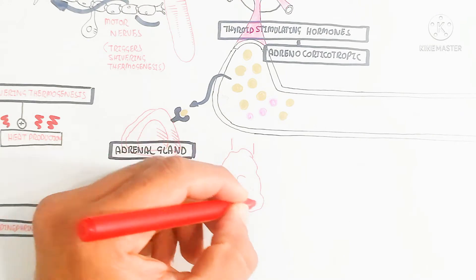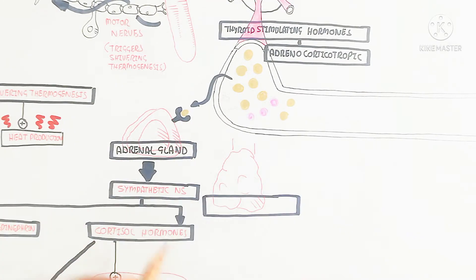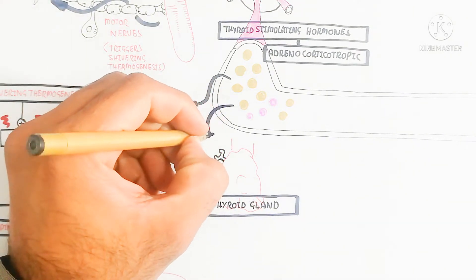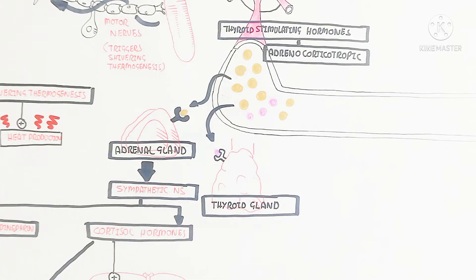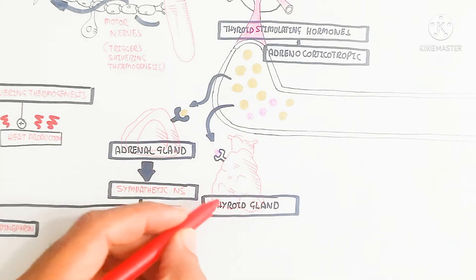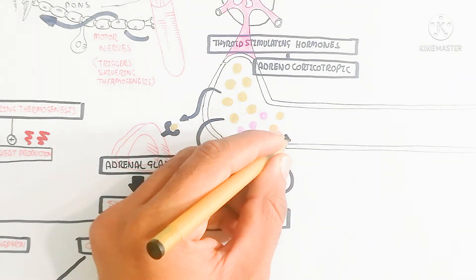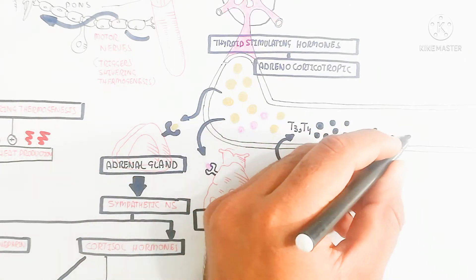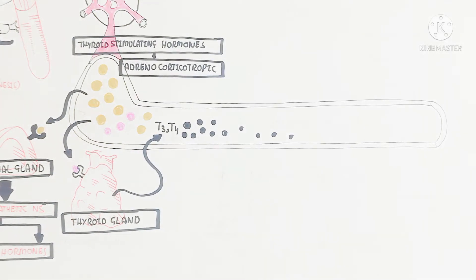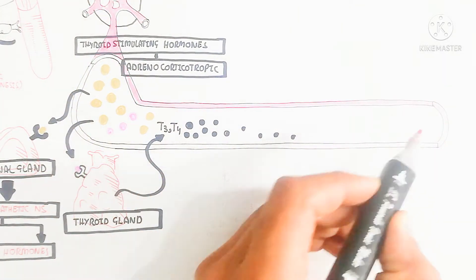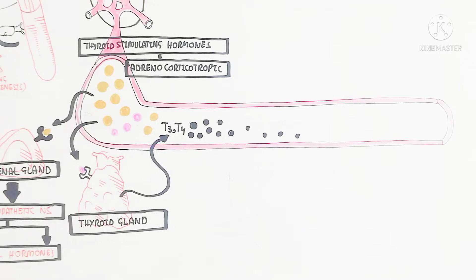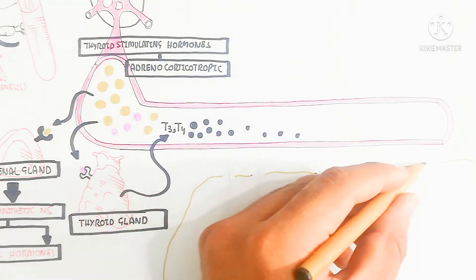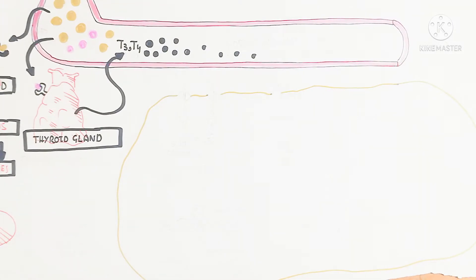Now let's understand the thyroid gland. The thyroid gland contains a thyroid stimulating hormone receptor. This TSH receptor will bind with the thyroid gland to produce T3 and T4 — triiodothyronine and thyroxine. Triiodothyronine and thyroxine are ultimately converted into triiodothyronine after the release of one iodine atom. Norepinephrine will also be produced, and the thyroid stimulating hormone will move inside — for example, into a muscle cell or some tissue.